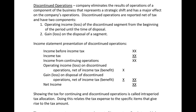Hello everyone, it's Professor Reiko here again. We're continuing our lessons dealing with the income statement. Today we're going to focus on discontinued operations. A discontinued operation is one of these items that comes at the bottom of your income statement. Companies may or may not have discontinued operations. Basically, a discontinued operation is when a company eliminates the results of operations of a component of the business that represents a strategic shift and has a major effect on the company's operations.